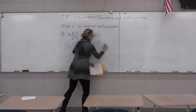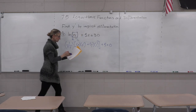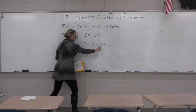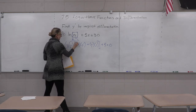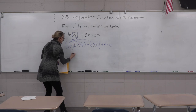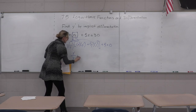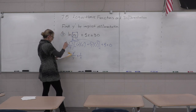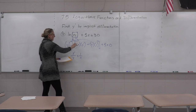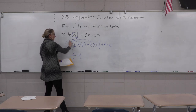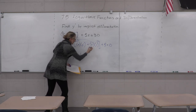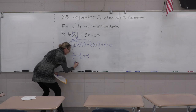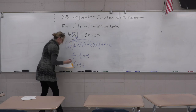Plus the derivative of five x is five, equals the derivative of thirty which is zero. Distributing and simplifying: the x's cancel giving y prime over y, and the y's give one over x. Move the five over: y prime over y equals negative five minus one over x.